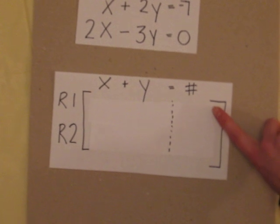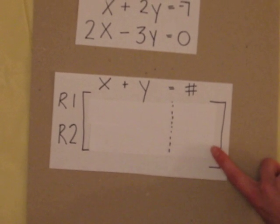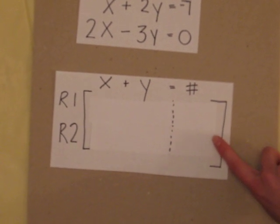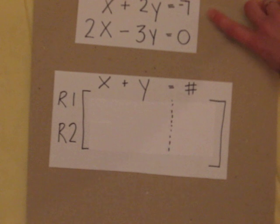R1, the first row, is the first equation. R2, the second row, is the second equation. Now, we're just going to be dealing with the numbers from our equations, not the letters.